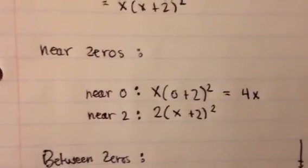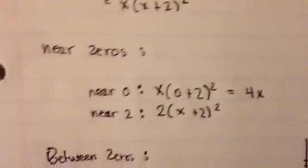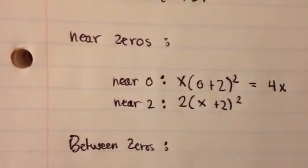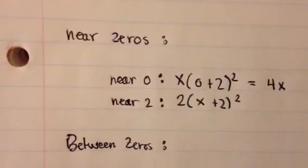And near the zeros would be x times 0 plus 2 squared, and near 2 would be 2 times x plus 2 squared.